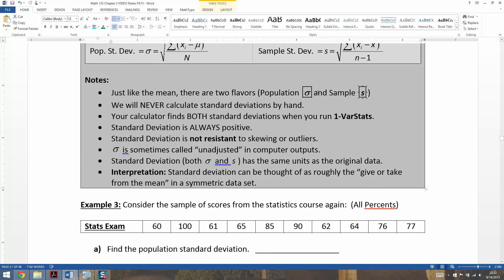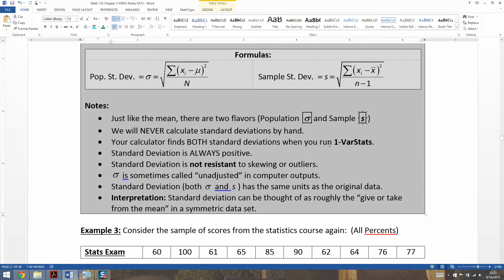Now, keep in mind, the calculator is going to find both of them. Well, I'll talk about it down here, but the calculator finds both of them. And so you are going to have to know, my data set was a sample, I'll use s, or my data was a population, so I'm going to use sigma. So you use whichever one is more appropriate for your data set.